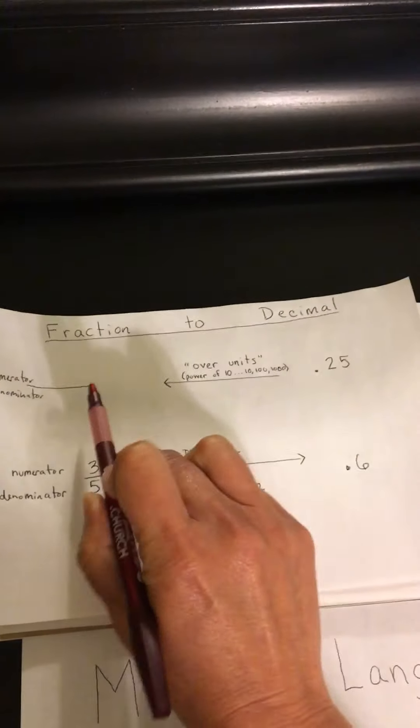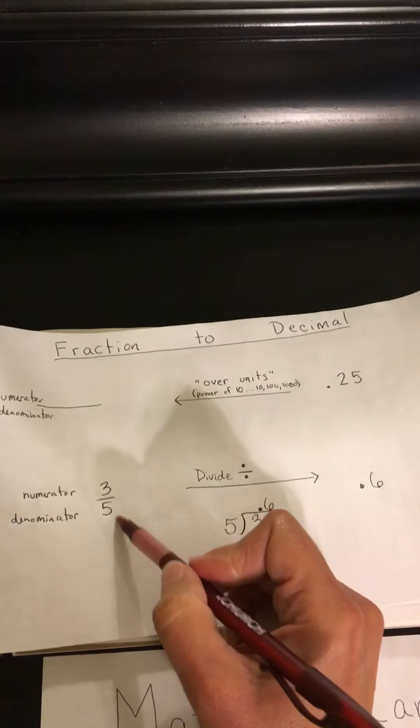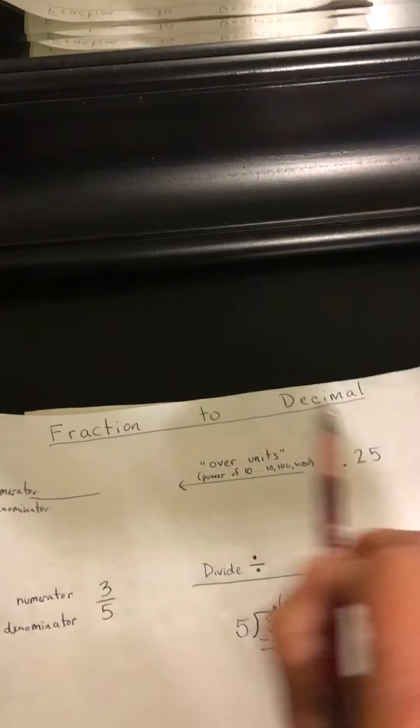So moving from fraction to decimal, it's just a division problem. And you read the division problem from top to bottom. Now, going in the other direction, from decimal to fraction.